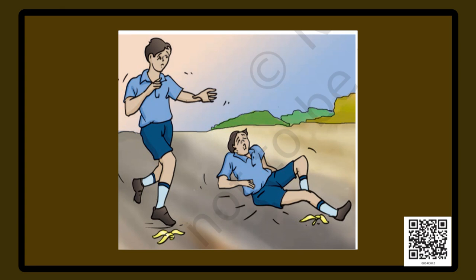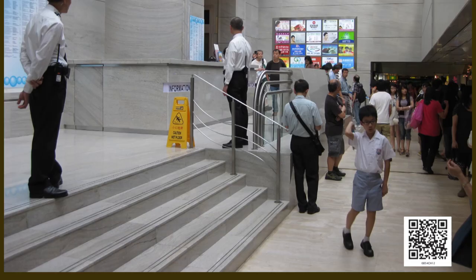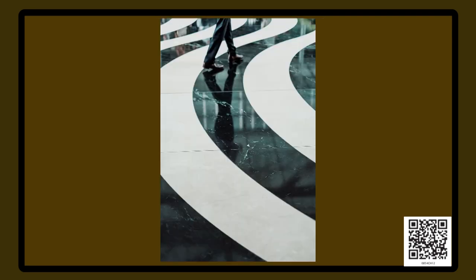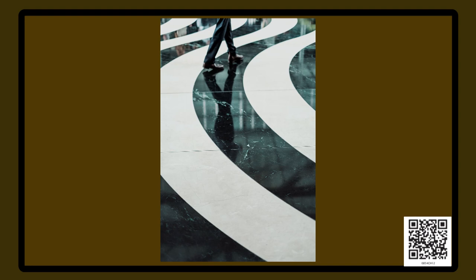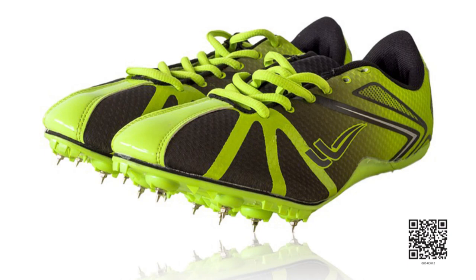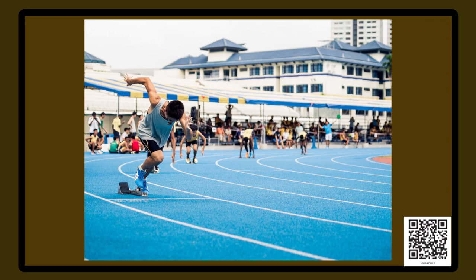Now let us discuss some cases where friction is desirable and how we maximize friction. We are all familiar that walking on a smooth wet floor is difficult. If we do not take care, we may even fall down. We are unable to walk freely because of the lack of sufficient friction. If you look at the sole of your shoe or sandal, you can see that it is grooved. These grooves are made for increasing the friction so that we can walk safely. If you look at the running spikes used by athletes, you can see sharp spikes at the sole — these spikes are fitted there to give sufficient friction while running.